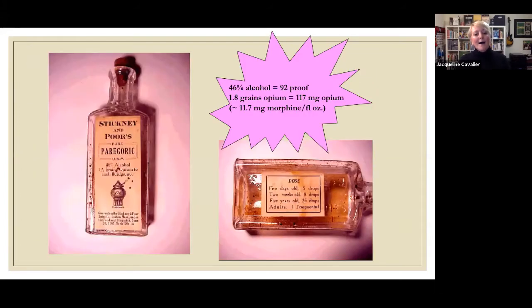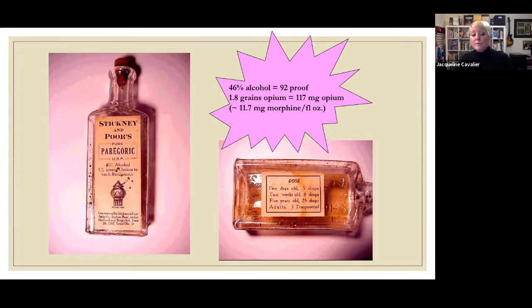Paregoric — you get a lot of bang for your buck out of paregoric. The alcohol content is quite high, at 92 proof. It contains opium and morphine. And if you look at the dosage: for a child five days old, it's five drops; two weeks old, eight drops; five years old, 25 drops; and an adult, one teaspoon. So this is of course being administered to infants and newborns.